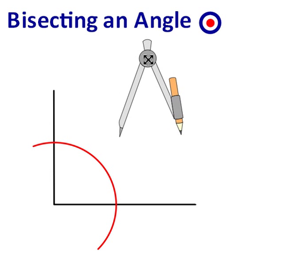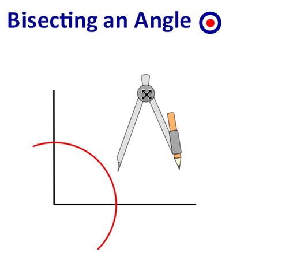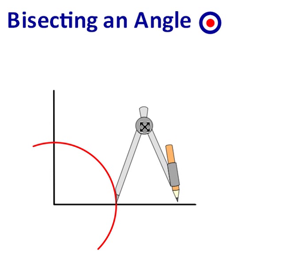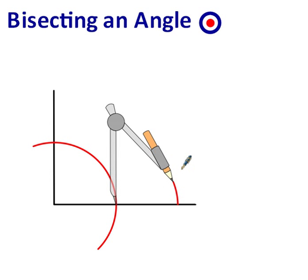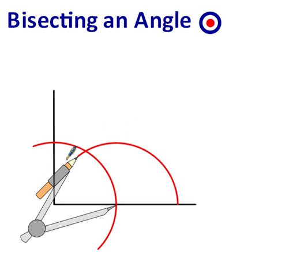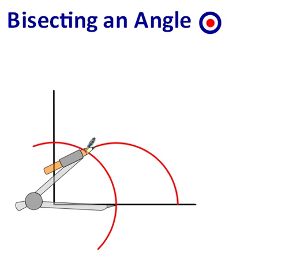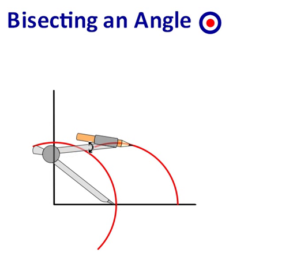I'm going to place my needle on the intersection that I've already made. I'm going to place the needle on this intersection I've already made and I'm going to draw a second arc.